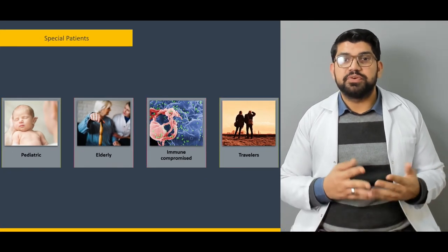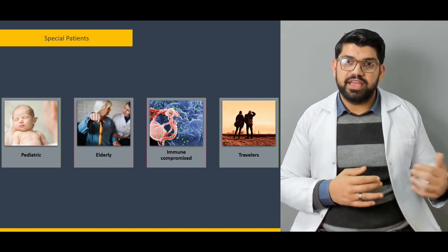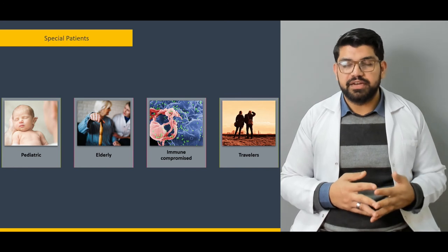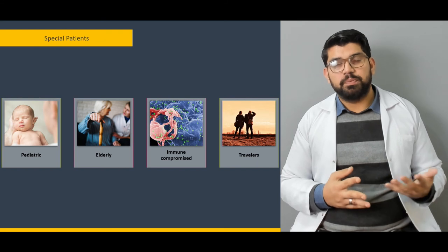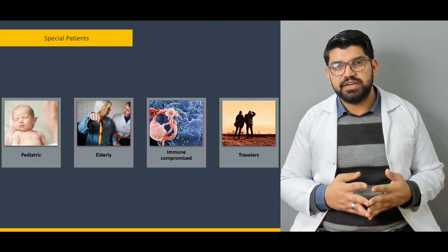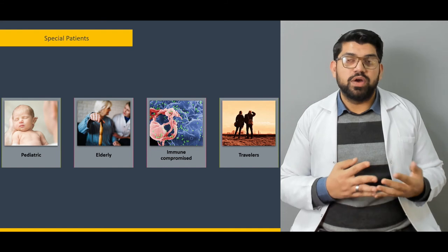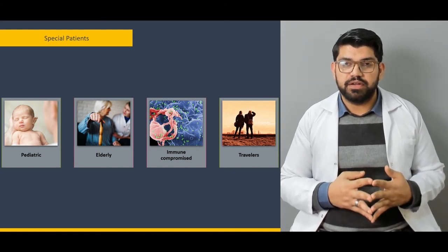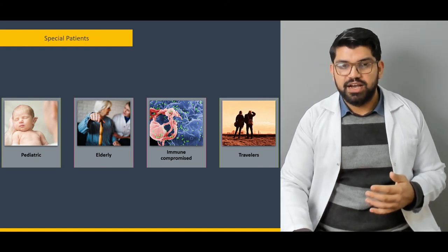Special patients include the pediatric population and the elderly. What are the differences between normal adults and pediatric or elderly patients? Also covered are immunocompromised patients — for example, those with HIV, undergoing chemotherapy or radiation, or post-renal or liver transplant — as well as patients with a history of traveling to underdeveloped countries where sanitation and hygiene are inadequate.